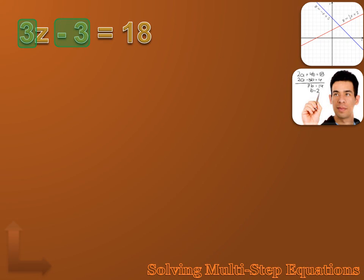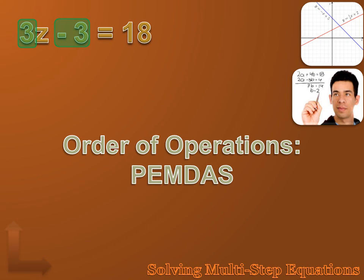The only question is, which should I get rid of first? Should I attack the subtract 3 first, or should I go after the 3 times first? You all remember the order of operations — PEMDAS says you should always do parentheses first, then exponents, then multiplication and division, then addition, then subtraction. But in algebra, when we're trying to isolate the Z, we're trying to undo operations — we're doing the reverse. So we're going to use our order of operations in reverse order.